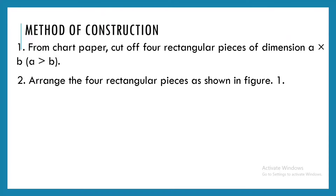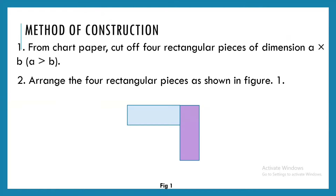I take four sheets of paper and cut out identical rectangular pieces. I arrange them to form figure one. I take the first rectangular sheet — it can be, let's say, 5 centimeters by 3 centimeters. Whatever length and breadth you want to take, you take four identical ones. I take the first, second, third, and fourth piece and arrange them like this, forming a square.